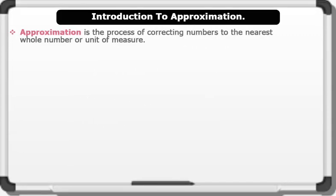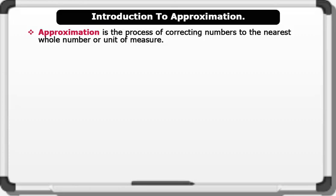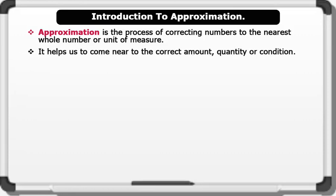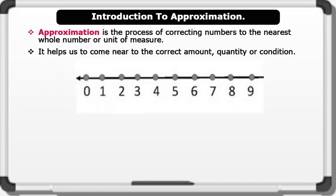Introduction to approximation. Approximation is the process of correcting numbers to the nearest whole number or unit of measure. It helps us to come near to the correct amount, quantity, or condition. The rule of approximation is explained using the number line on the board. Note that if the number you are approximating — that is, the target digit — is followed by...